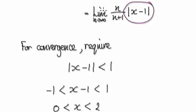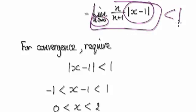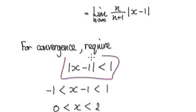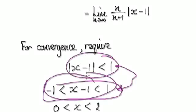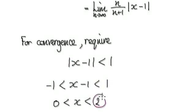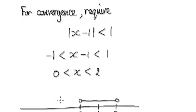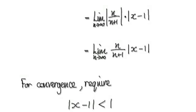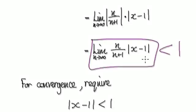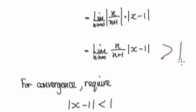So we require this part to be less than one. Rewriting it and then adding one to everything gives us this interval. So the radius of convergence is one, and anything in this open interval we know for sure will converge. If the limit is greater than one, the series diverges, but we don't really care about the diverge case here.